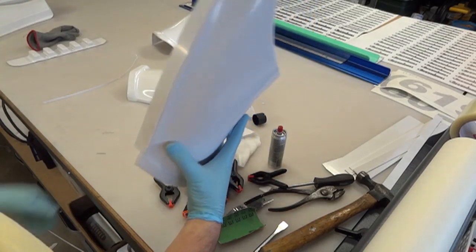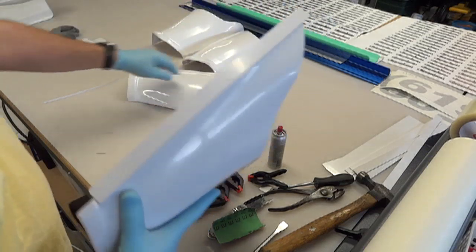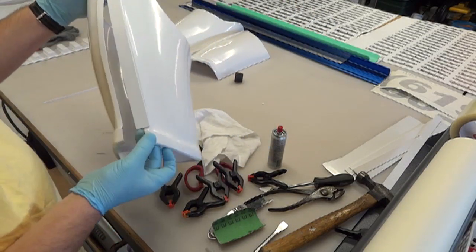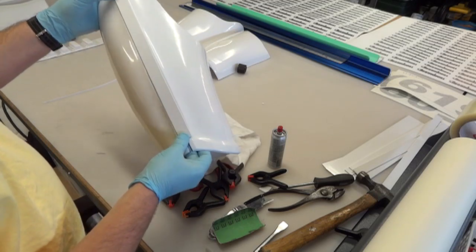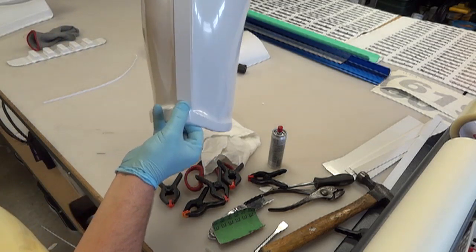All right, so there's one strip that's on. And the next part's a little tricky because you don't have any way to clamp the center. As you can see, it's going to look pretty sweet.